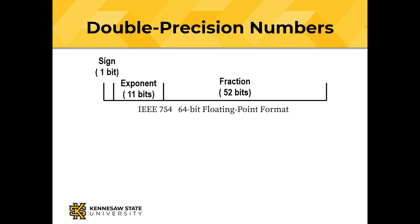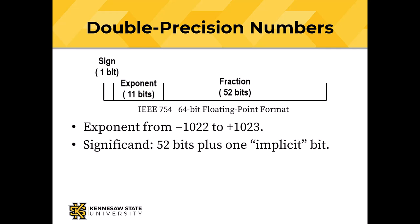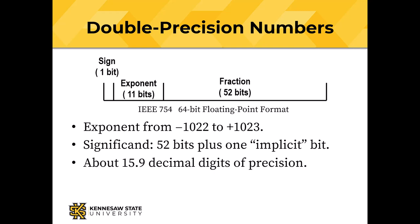There are other floating point formats besides the 32-bit format. The most common is double precision, or 64-bit floating point. There's a sign bit, then 11 bits of exponent, providing a range of minus 1022 to plus 1023. The significand is 52 bits plus one implicit bit, giving about 15.9 decimal digits of precision and a range of plus or minus 10 to the minus 308 to plus or minus 10 to the plus 308. There are also 128-bit quadruple precision and 256-bit octuple precision formats in the IEEE 754 standard.